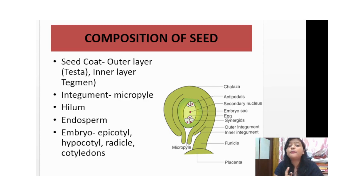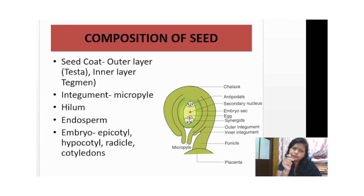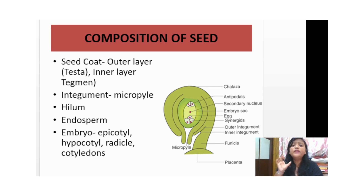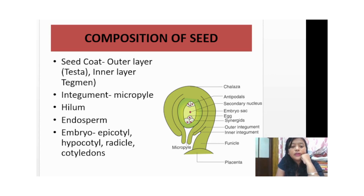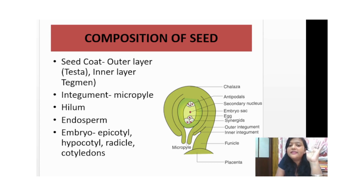There is also a part known as the hilum — it's just like a navel in the human body. In some seeds, the micropyle and hilum are both present. Now we come to the endosperm: the endosperm is basically the food part, providing food to the growing embryo. It contains the food reserve of the seed. Next is the embryo, which consists of the epicotyl, hypocotyl, radicle, and cotyledons — we'll talk about these more shortly.